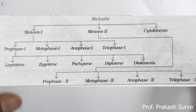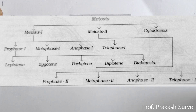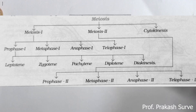In meiosis one there are four phases: prophase one, metaphase one, anaphase one, and telophase one. Before that, meiosis one and meiosis two each show karyokinesis and cytokinesis. Karyokinesis means the division of the nucleus. In karyokinesis we get prophase one first. So in meiosis one there is prophase one, metaphase one, anaphase one, and telophase one.